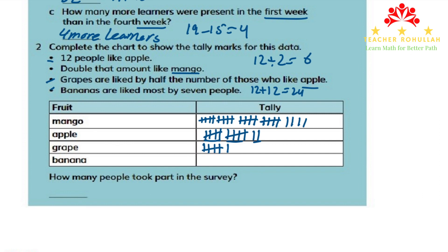The last point says bananas are liked most by 7 people. So again we use tally marks: 5, then 2 more. We are done marking the number of people who liked mango, apple, grape, and banana.